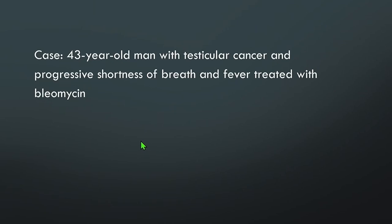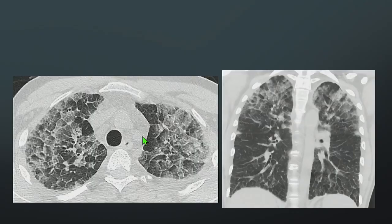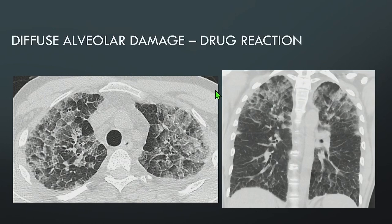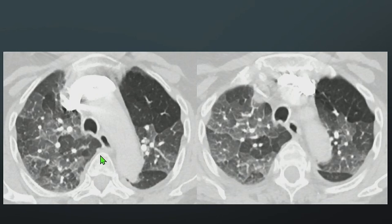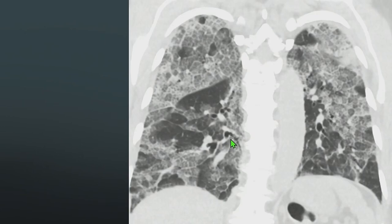Another patient: a 43-year-old man with testicular cancer, progressive shortness of breath and fever, treated with bleomycin. There is bilateral ground glass with intervening smooth interlobular septal thickening predominantly involving the upper lungs. This is diffuse alveolar damage. Another patient, a 43-year-old with shortness of breath, has cardiomegaly and perihilar fullness on chest x-ray — good for pulmonary edema — confirmed on CT with bilateral ground glass and smooth interlobular septal thickening. This is pulmonary edema. Another patient also shows bilateral ground glass with interlobular septal thickening surrounding secondary pulmonary lobules — this is COVID pneumonia.